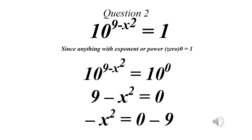Now for question number 2: 10 raised to power 9 minus x squared equals 1. This is straightforward — we need the same base of 10. Since 10 raised to power 0 equals 1, we rewrite the right side as 10 raised to power 0. So we have 10 raised to power (9 minus x squared) equals 10 raised to power 0.